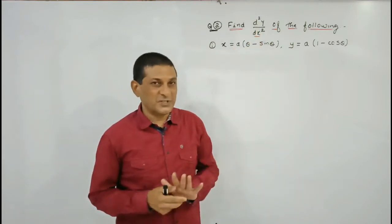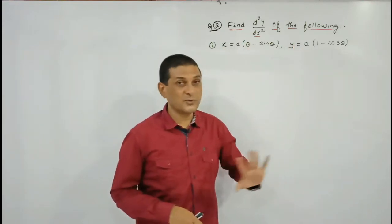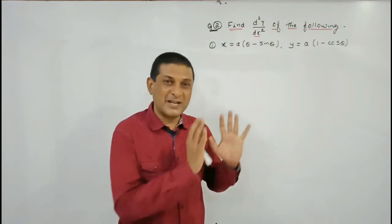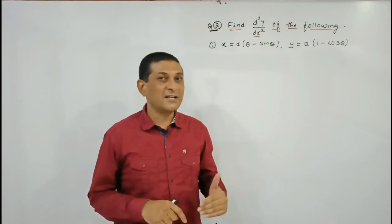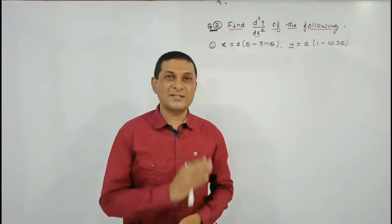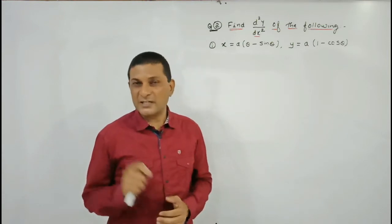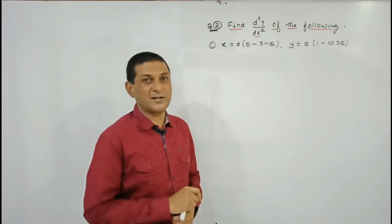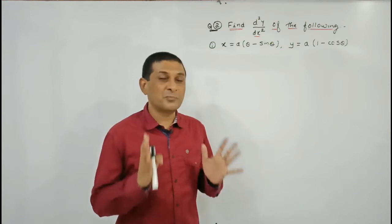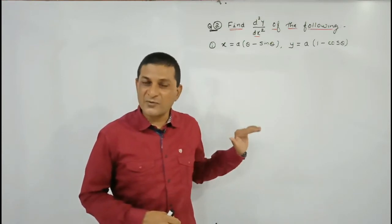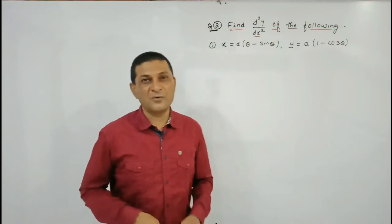In question number two we have to find out the second order derivative of the following functions. In this case we can observe that the given function is parametric, because the value of x is also in terms of theta and y is also in terms of theta. If x and y are each in terms of a new variable, that new variable is called the parameter and the function is called a parametric function.